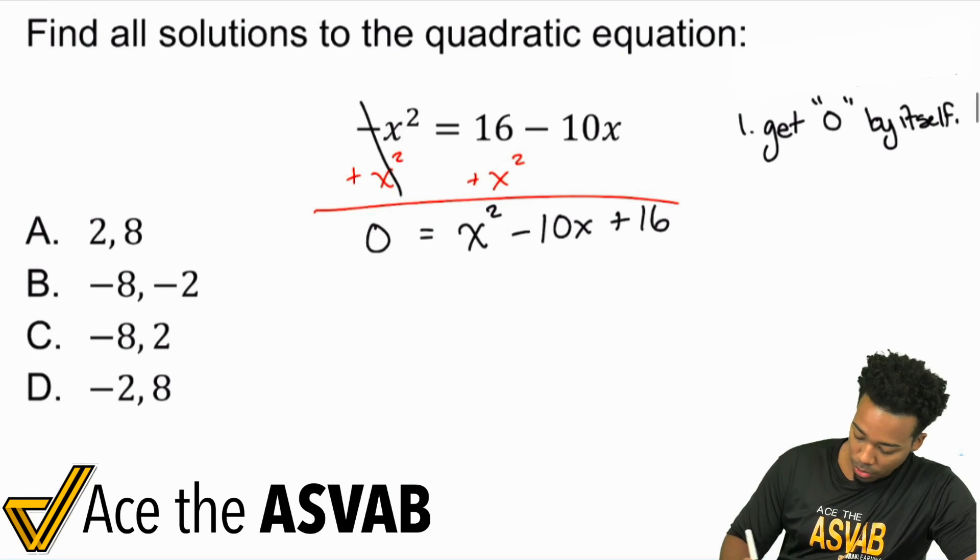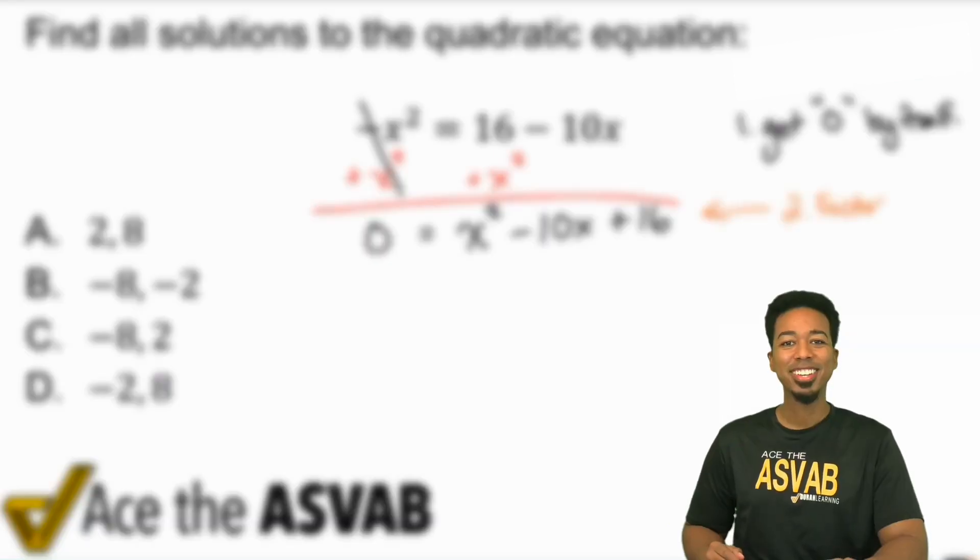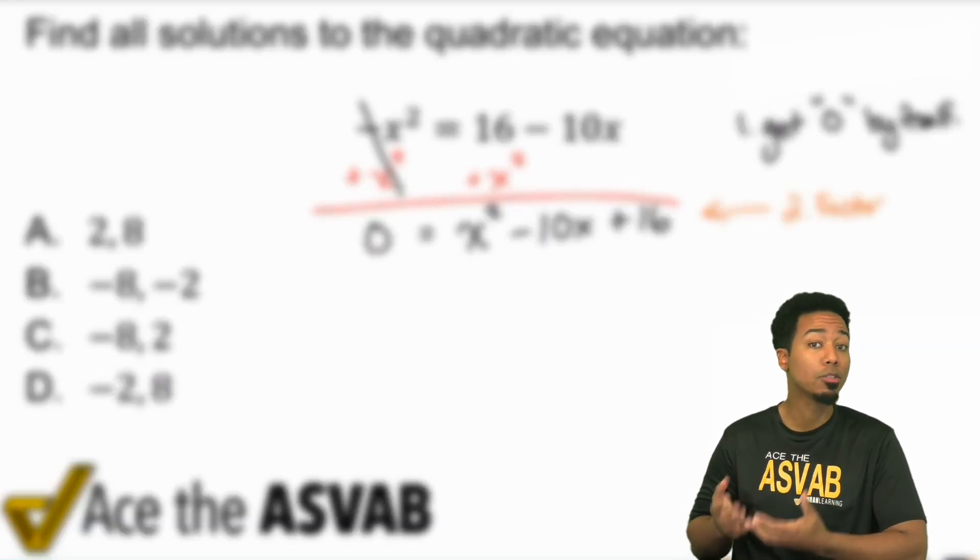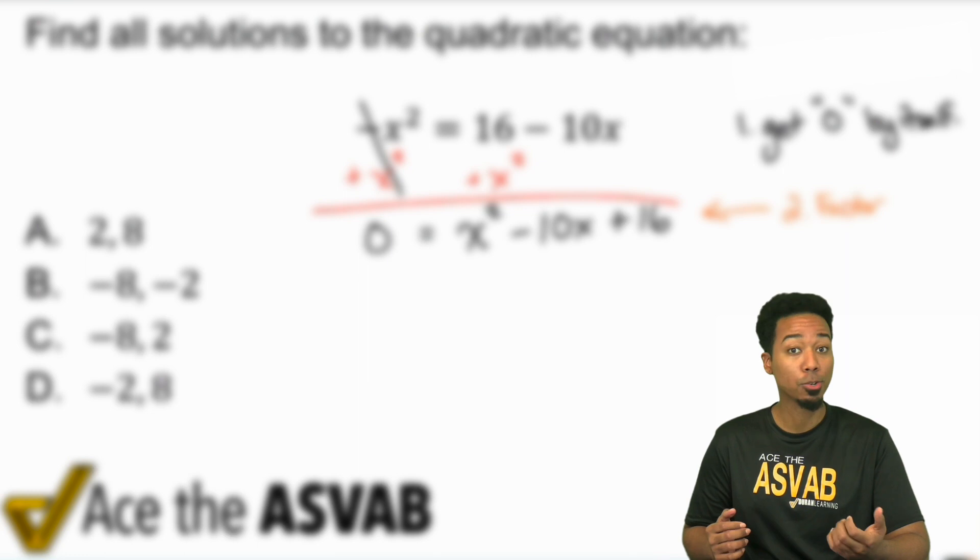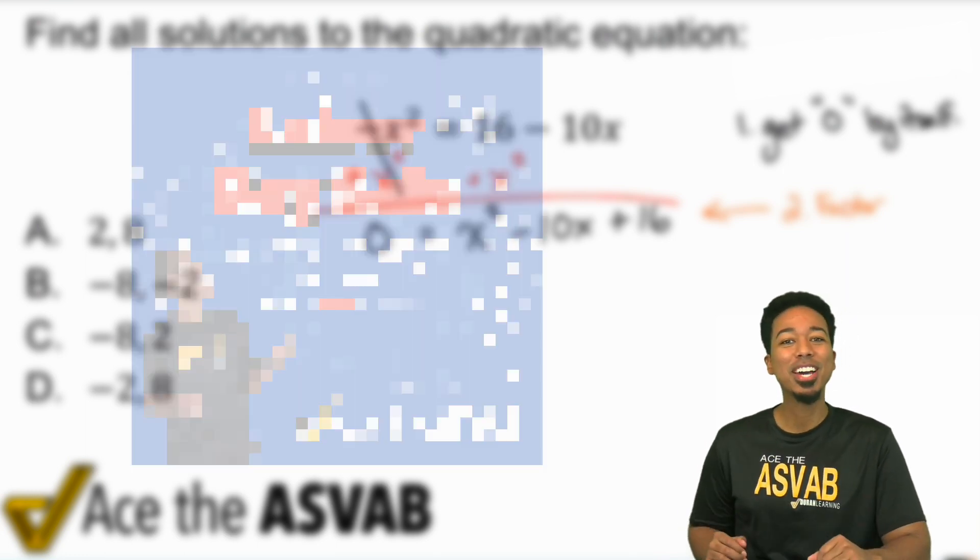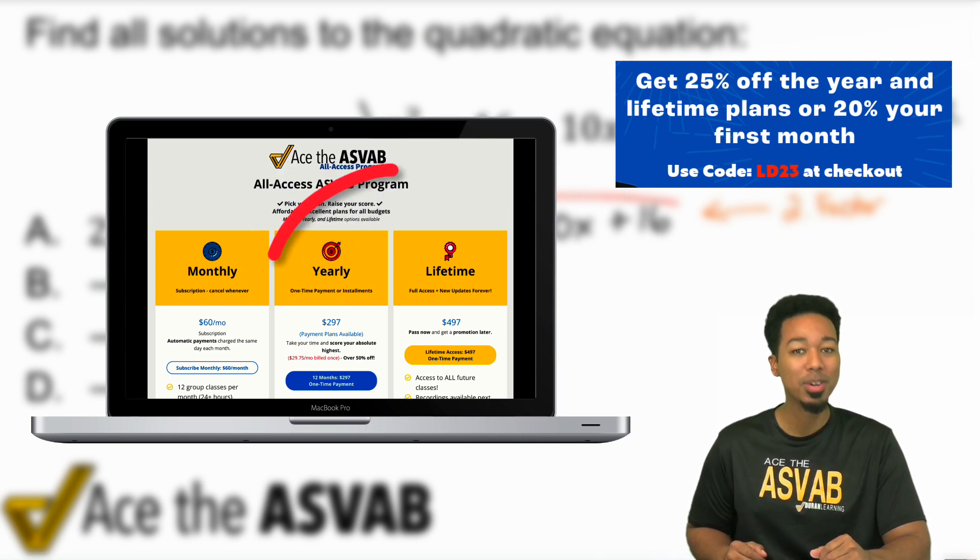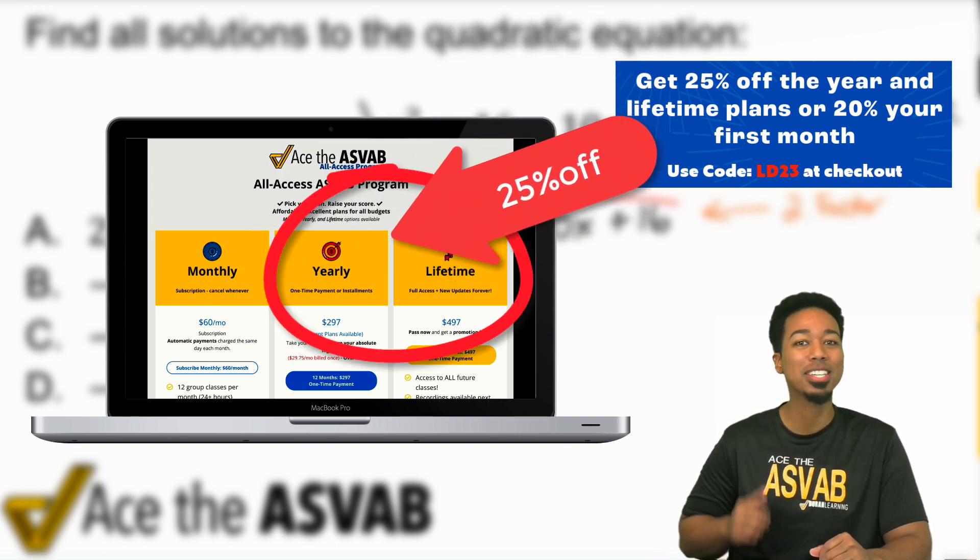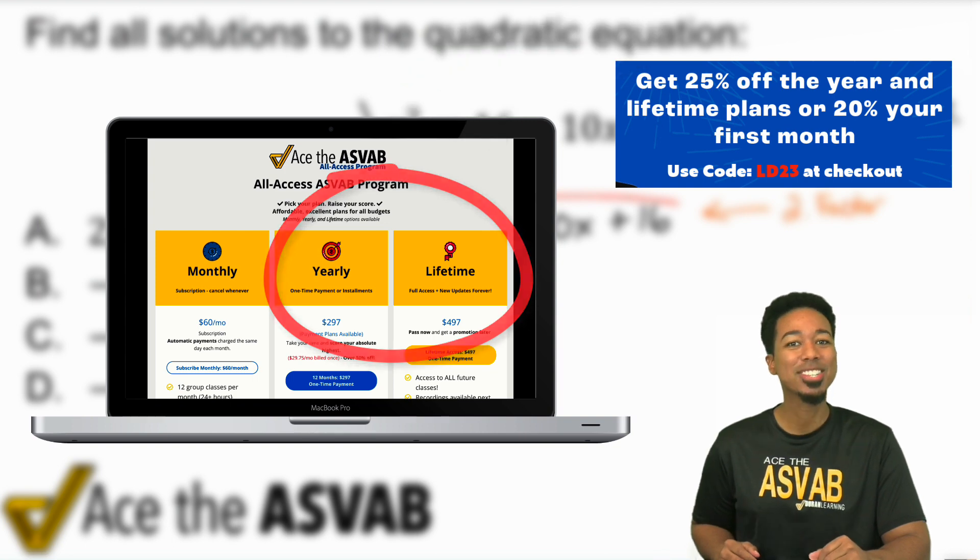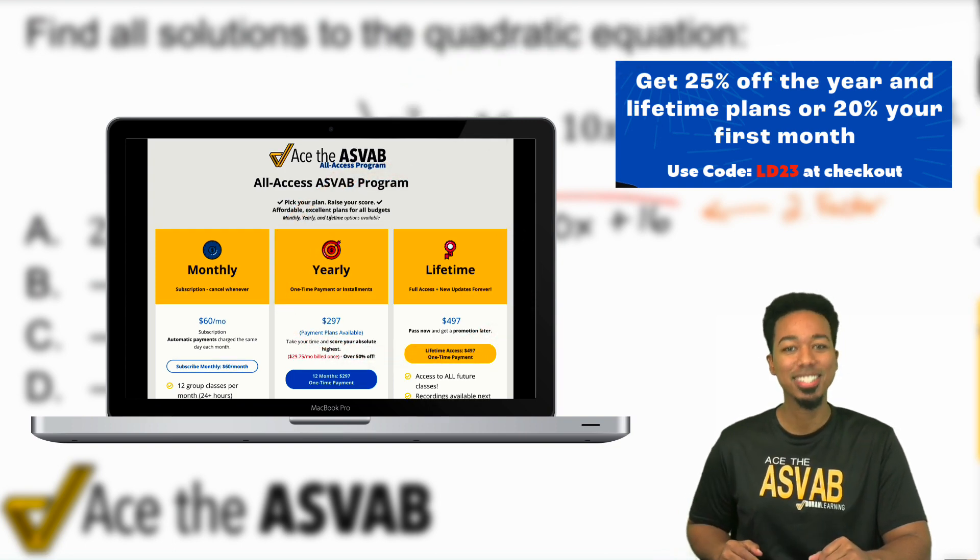So just remember that, but we're going to go ahead and make this process nice and easy. What we're going to do is we're going to factor this: step two, factor your polynomial. And remember, it's really important to use good materials to study for the ASVAB. If you're looking for great materials, go ahead and take advantage of our Labor Day sale where you can get 20% off your first month of our ASVAB all-access program or 25% off the year or the lifetime packages.